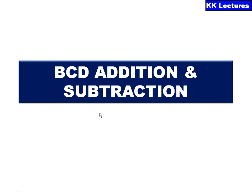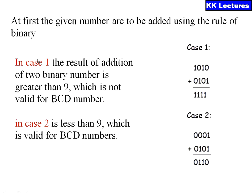Binary coded decimal addition and subtraction — what is the method we are going to follow to make the addition or find the difference of two BCD numbers? The first step is to add the given numbers using the rules of binary addition. Here I am showing two examples: example one is adding 1011 and 0101, and example two is adding 0001 and 0101.